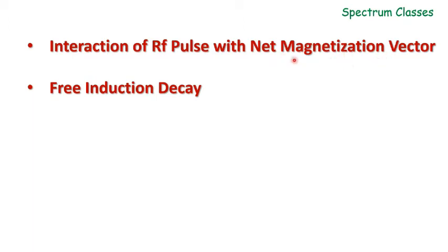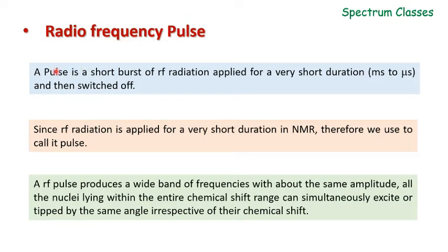The net magnetization vector is the sum of the magnetic dipole moment of the nuclei present in the sample, and a radio frequency pulse behaves as a static field in the rotating frame of reference. Since these two concepts will be used in this video, these two previous videos are very important to watch. A pulse is a short burst of radio frequency radiation applied for a very short duration in the range of milliseconds to microseconds and then switched off.